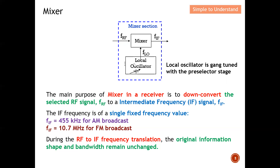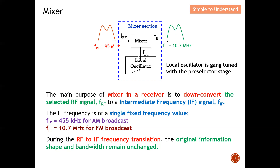For example, in Singapore, let's say we have a FM receiver. We have Class 95 which broadcasts at 95 MHz. In order to listen to that DJ, I need to tune my FRF to the center frequency of 95 MHz — with the help of FLO and the pre-selector. The mixer then down-converts 95 MHz to 10.7 MHz, allowing you to hear the DJ at Class 95.